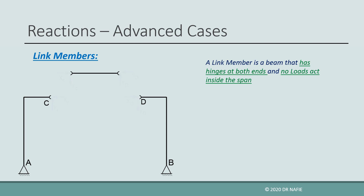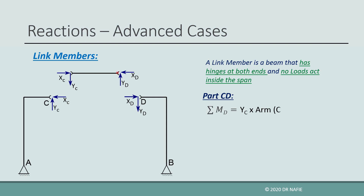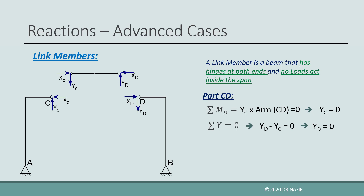Because both ends are hinges, at each end we will have two internal forces but no moments. By considering the equilibrium of member CD and taking the sum of moments about point D, we find that the force YC should be equal to zero. Similarly, by applying sigma Y equals zero, we find that YD should be zero. Therefore, only internal forces in the direction of the member will exist.